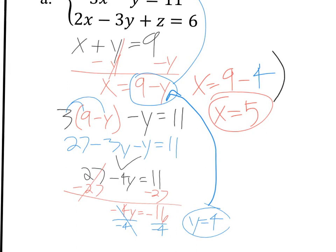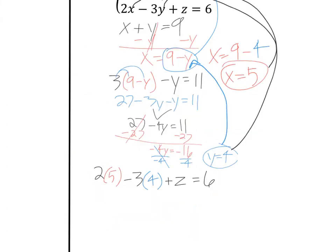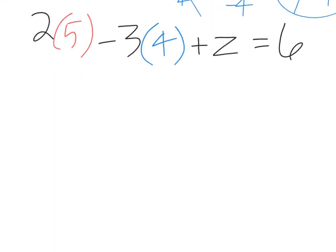So x equals five, I'll take that, plug it in right there. Y equals four, I'll take that, plug it in right there. So I have two x, two times five, minus three y, minus three times four, plus z equals six. All right, so now just do your multiplication. Two times five, that makes 10, minus three times four, that makes 12, plus z equals six.